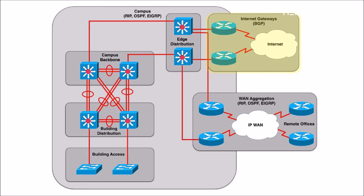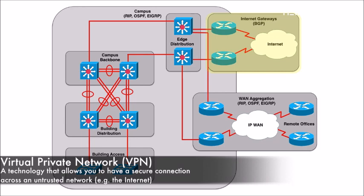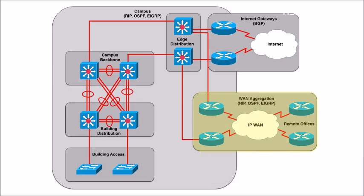Sometimes when we connect out to a remote office, we're doing so through the internet. As we'll be discussing in this course, we can set up a secure VPN — a virtual private network connection — over an untrusted network like the internet. However, we might also have some other IP WAN technology that gets us from our main office out to remote offices.